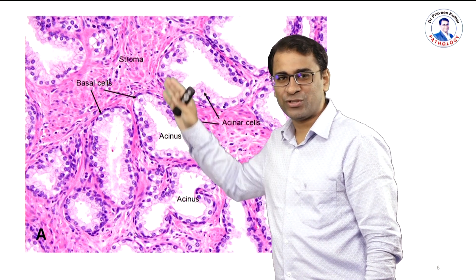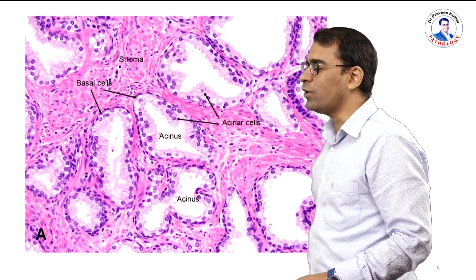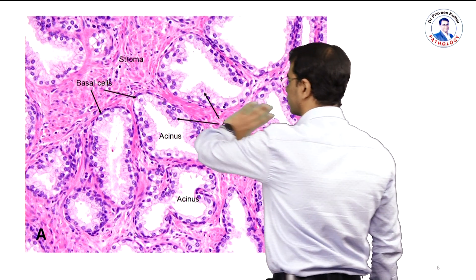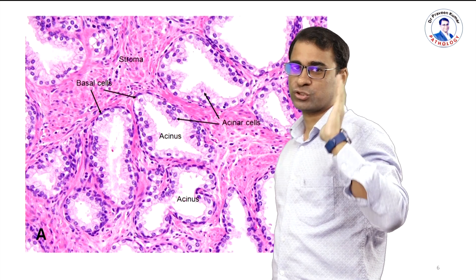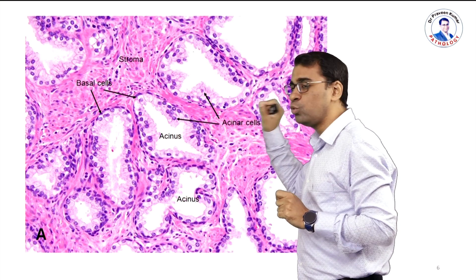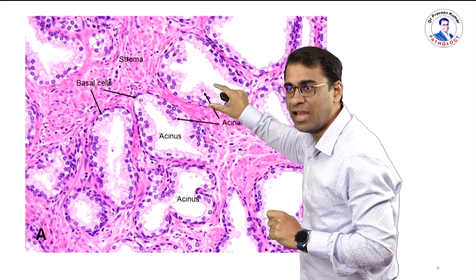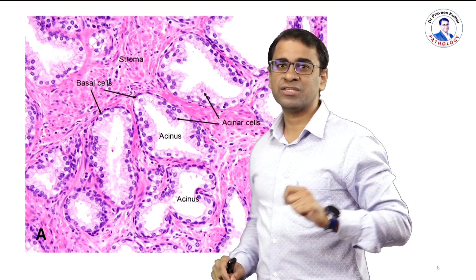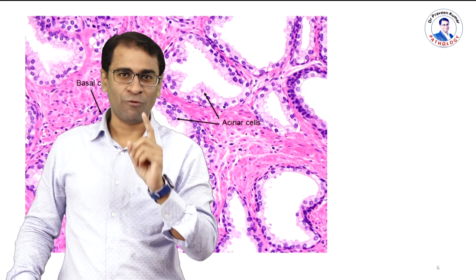What you see here is actually a stromal area. And what you see here, these all cells, these all are the glands. What you observe here is the pink color stromal area, and this pink area has a muscular stroma. Remember, it has a muscular stroma. This pink color muscular stroma responds to testosterone. And this is a gland — look at the gland, it has a two-layer epithelium. This two-layer epithelium is very, very important to understand the normal histology.